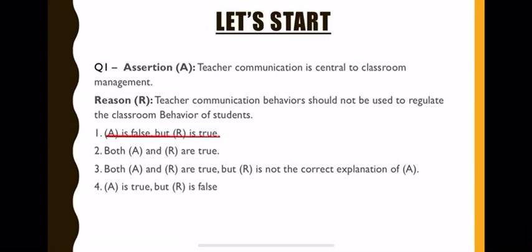The second option says both A and R are true. But the reason says teacher communication behavior should not be used to regulate classroom behavior, which is not true. So the reason is false. Where R is true, we eliminate that option. So option second and third are eliminated. Your answer is option fourth, which says assertion is true but the reason is false. The statement that teacher communication is central to classroom management is absolutely true, but the reason given is absolutely wrong.